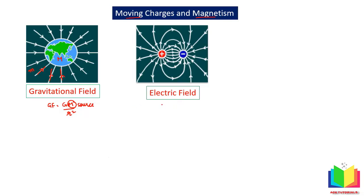Similarly, you have the electric field, which comes from k — that is 1 over 4 pi epsilon naught — times q by r squared. If there is a charge q, it will generate a field, and if there is another charge in this field, there is a force of attraction or repulsion. These two charges create a field around them and anything in this field will experience a force.